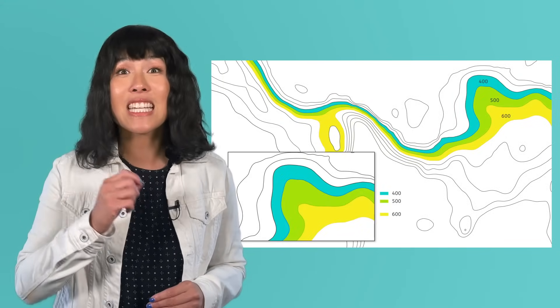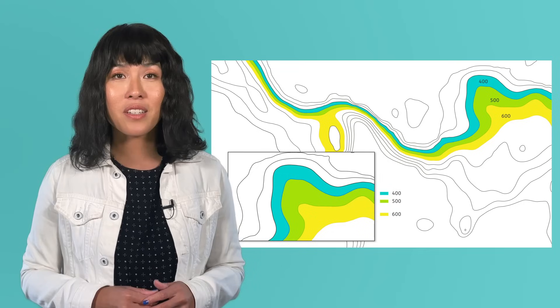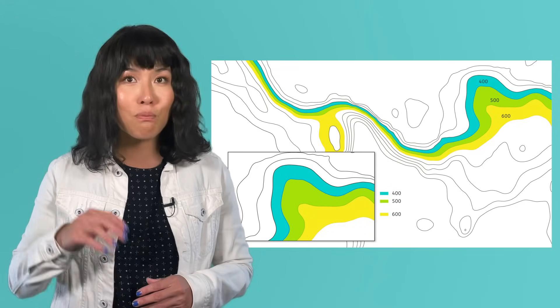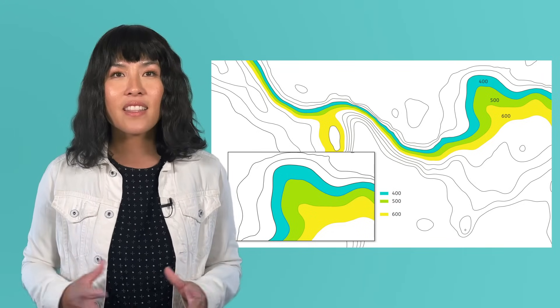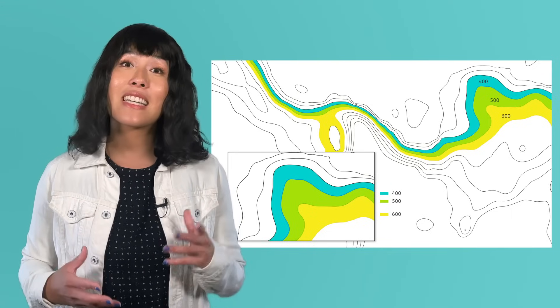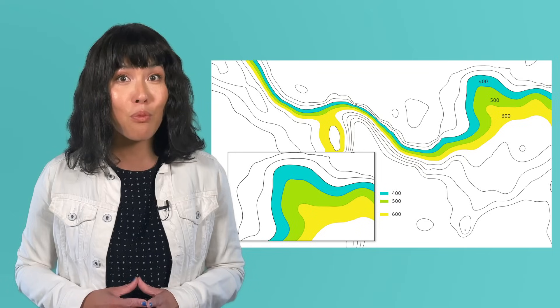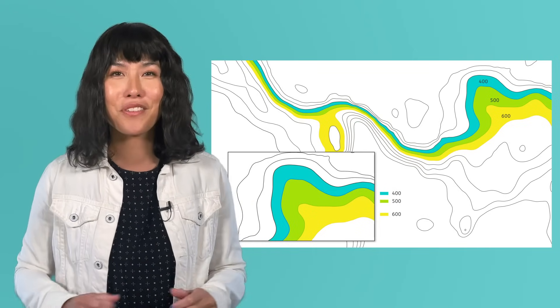On a topographic map, each contour line represents a set difference in elevation, like 100 feet. Every time you move to the next contour line on the map, the elevation changes by that amount. In other words, if this blue area has an elevation of 400 feet, then the green area is 500 feet, and the yellow area is 600 feet. And the next band up would have an elevation of 700 feet.